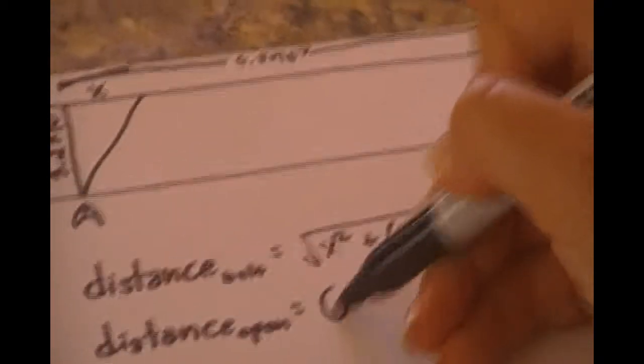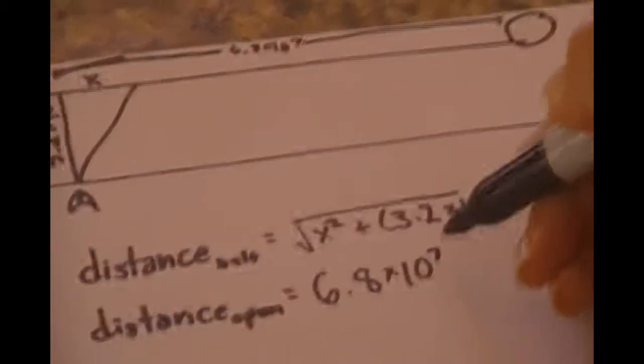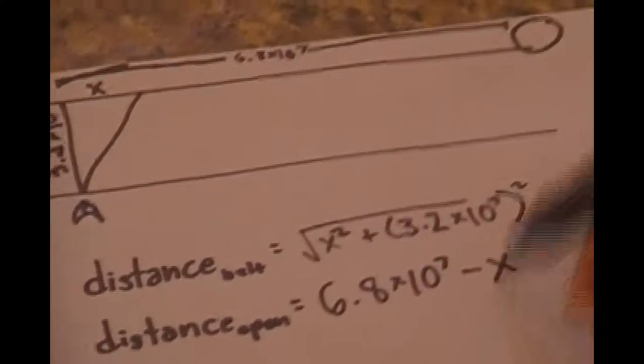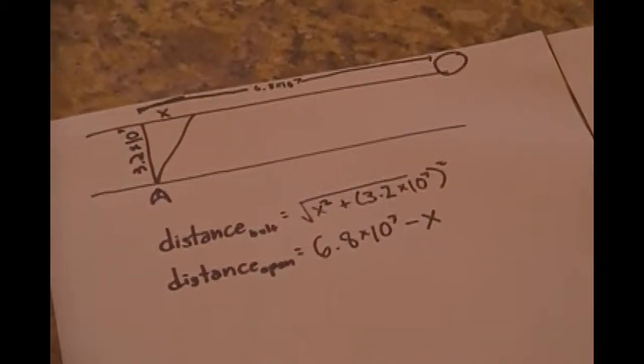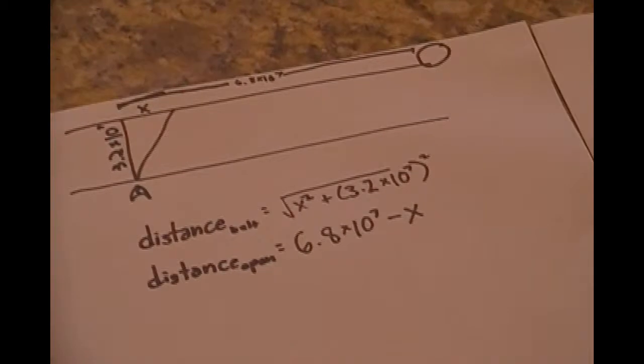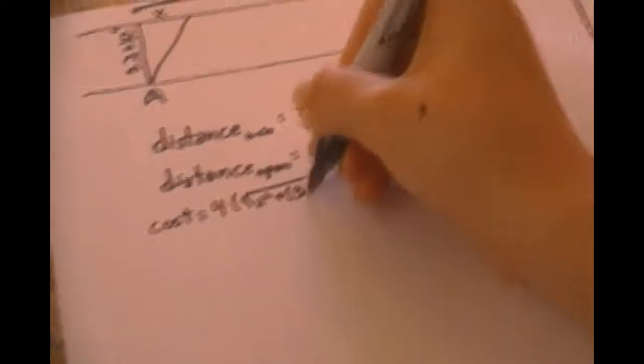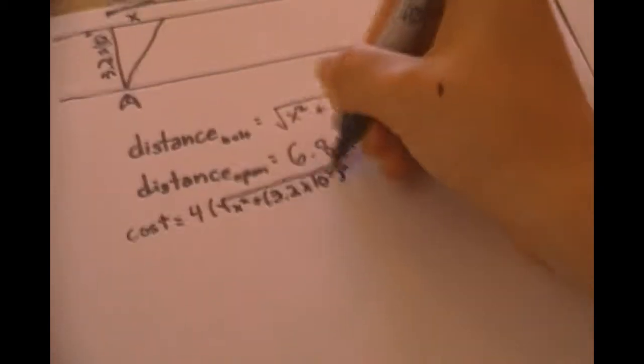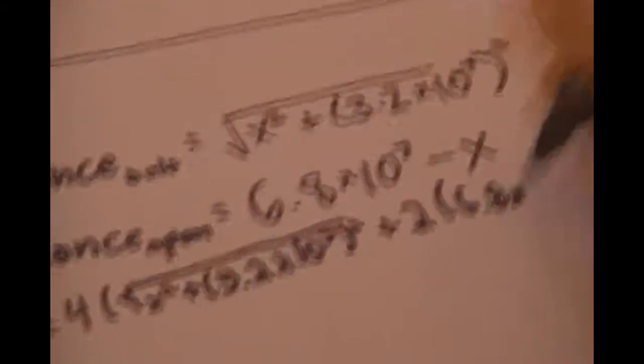We find the distance through open space as 68 million miles or 6.8 times 10 to the 7 minus x. The cost of fuel through an asteroid belt is 4 credits, and the fuel through open space is 2 credits. So the total cost is equal to 4 times the distance through the asteroid belt plus 2 times the distance through open space.